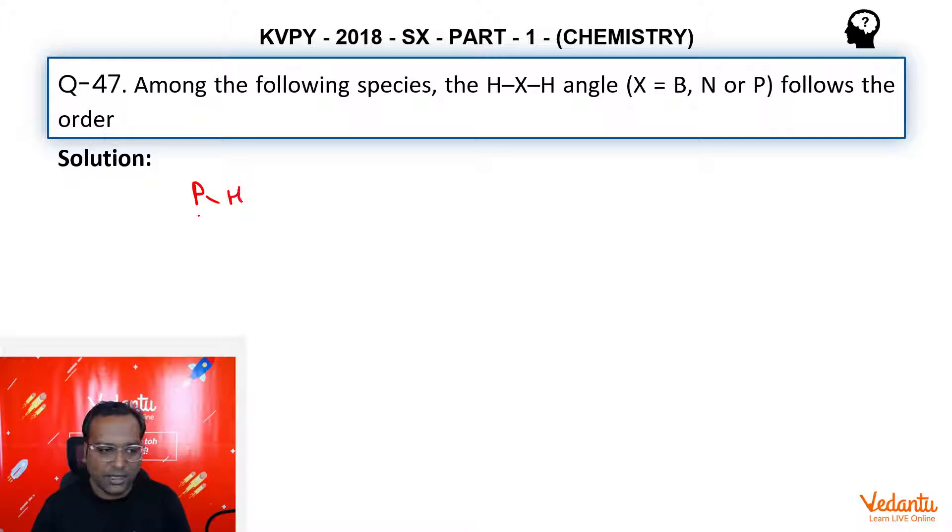So first structure is PH3. We know that in phosphine, hybridization is not valid, is not applicable based on Drago's rule. And therefore, the bond angle here is very close to 90 degrees. Pure P orbitals are involved in bond formation.